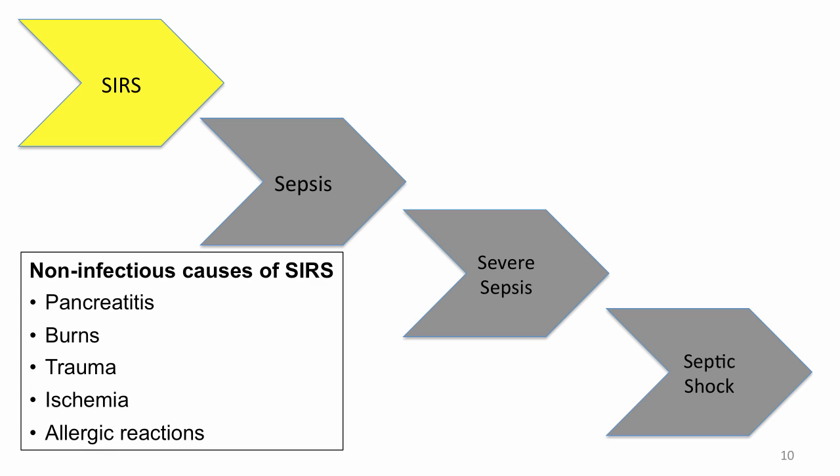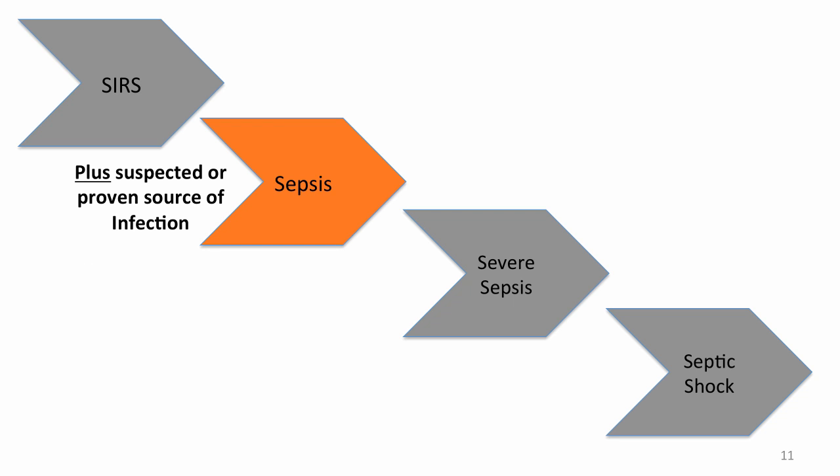SIRS is not necessarily always caused by infection — there are non-infectious causes such as pancreatitis, severe burns, trauma, ischemia, hypoperfusion of an organ releasing inflammatory cytokines, or allergic reactions. When you see somebody with SIRS, you need to decide whether it's infectious or non-infectious. When SIRS occurs with a suspected or proven source of infection, the definition changes to sepsis.